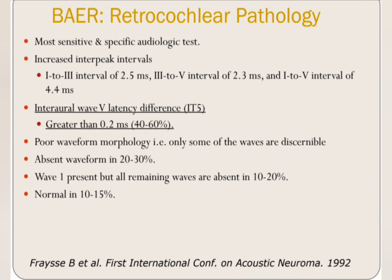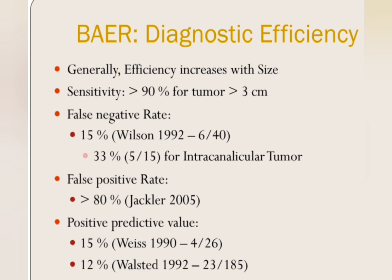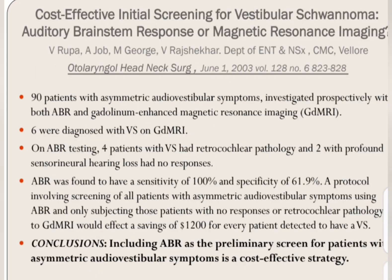ABR is used as an important screening test for acoustic neuroma. There will be increased inter-peak interval, and sometimes an inter-ear wave 5 latency difference of more than 2.0 milliseconds. In a resource-constrained setting where MRI is not available, ABR can be an important cost-effective tool for screening. You can suspect acoustic neuroma and then send the patient to a higher centre with MRI facility for diagnosis.